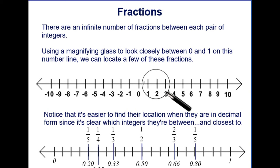There are an infinite number of fractions between each pair of integers. So here it is on the number line. You have your normal number line with integers. It's hard to see, so we have to imagine, like we're using a magnifying glass to look closely between, for example, 0 and 1 on this number line. We can locate a few of these fractions.